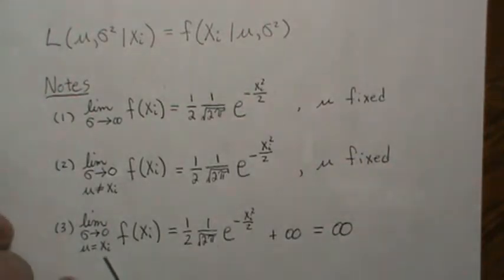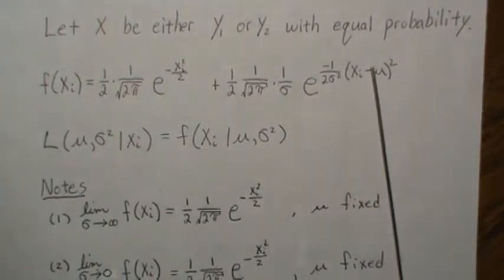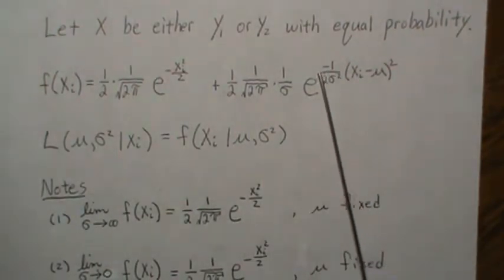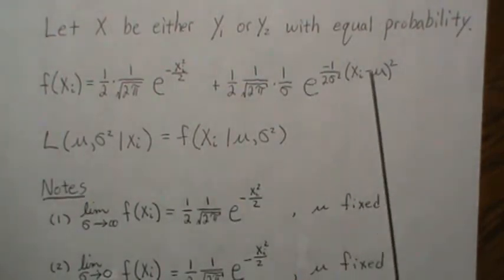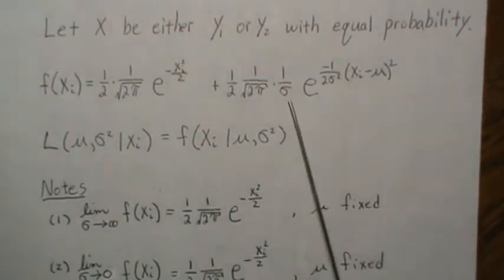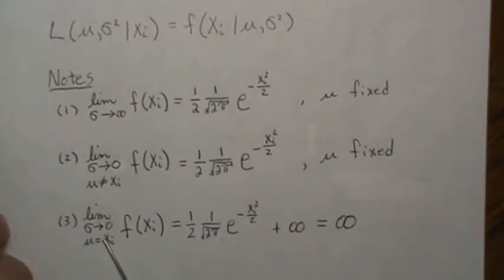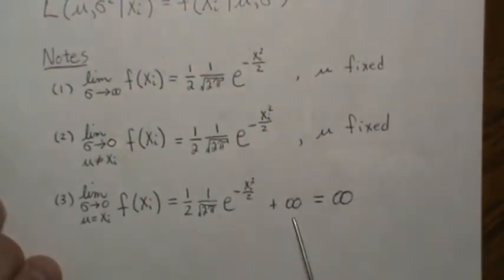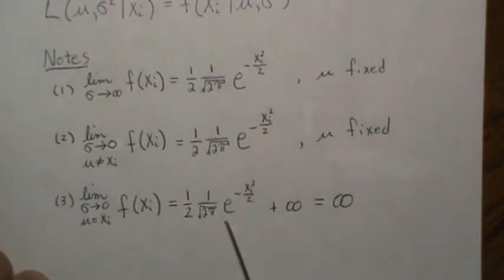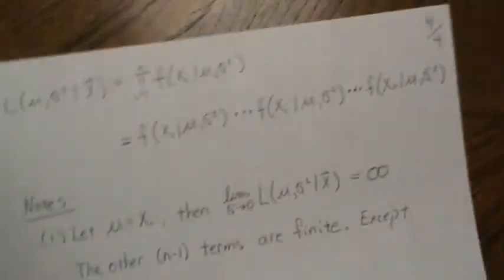The interesting case is when we let μ = Xᵢ exactly. Then the exponent in the second component becomes 0, so e⁰ = 1. As σ → 0, the coefficient 1/σ goes to infinity, and so the entire mixture density goes to infinity. This is the key property that creates problems for the MLE.